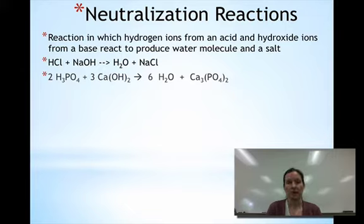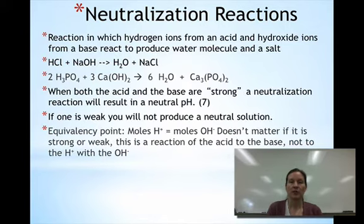H is plus one, OH is minus one, so the molecule they make always comes together in a one-to-one relationship, and then we use our coefficients to balance out the whole reaction. So when you have a neutralization reaction where both the acid and the base are considered strong, our neutralization point, the point at which they are neutral, will have a pH of 7.